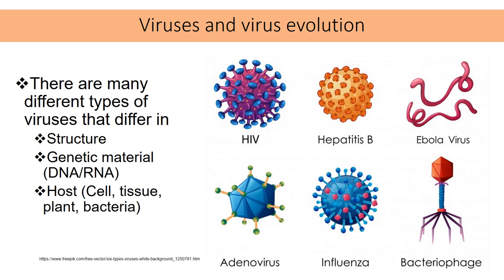There are many different types of viruses and they differ in terms of structure or shape and genetic material. For example, some viruses have single-stranded DNA or double-stranded DNA, and other viruses actually have RNA, whether it's single-stranded or double-stranded. They also differ in terms of the host cell that they actually infect.